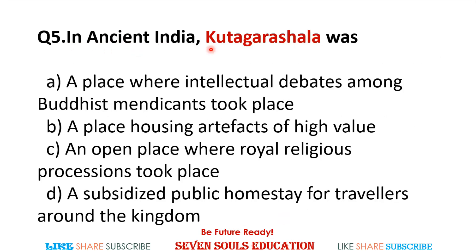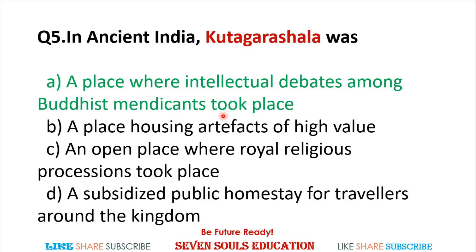Kutagrasala was: a place where intellectual debates among Buddhist mendicants took place; a place housing artifacts of high value; an open place where royal religious processions took place; or a subsidized public homestay for travelers. The answer is A — Kutagrasala was a place where intellectual debates among Buddhist mendicants took place.